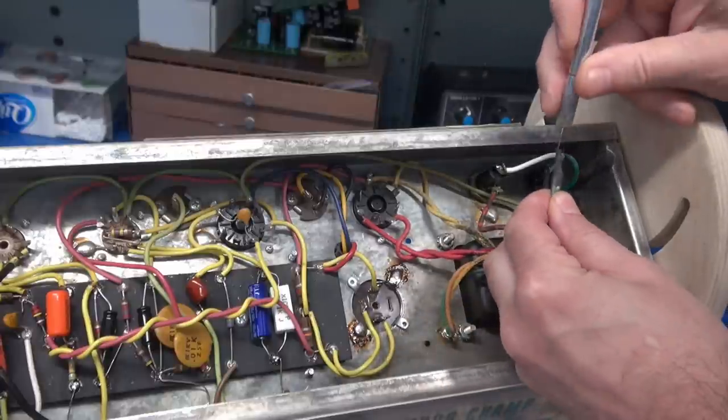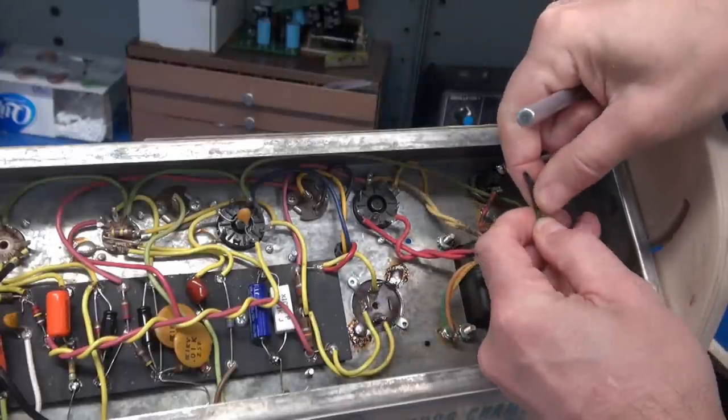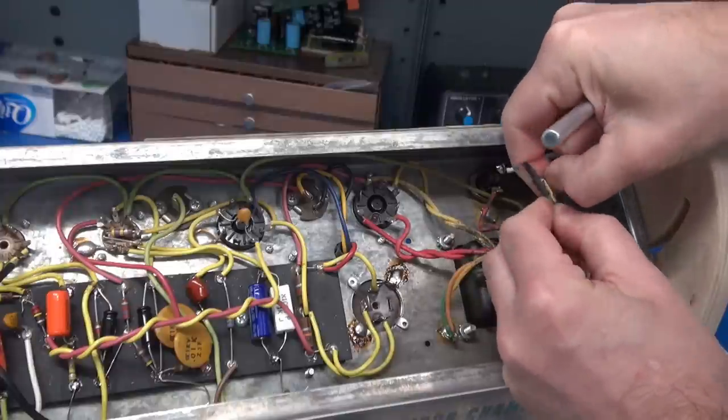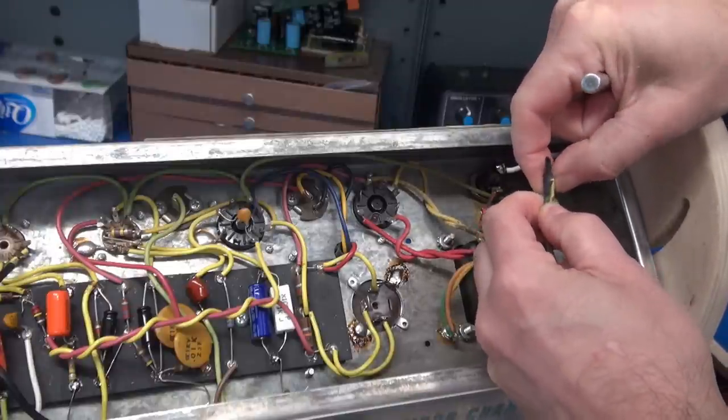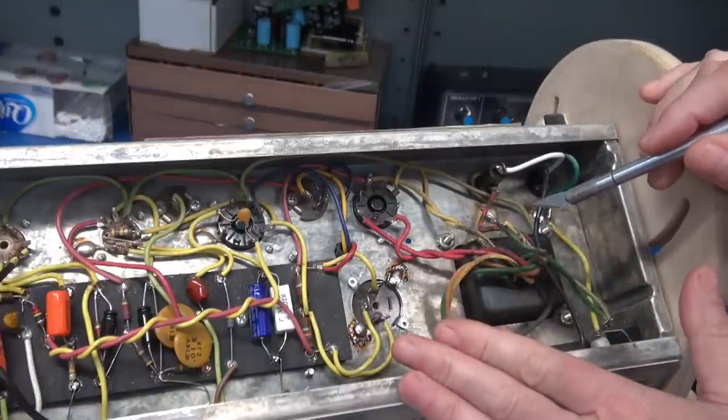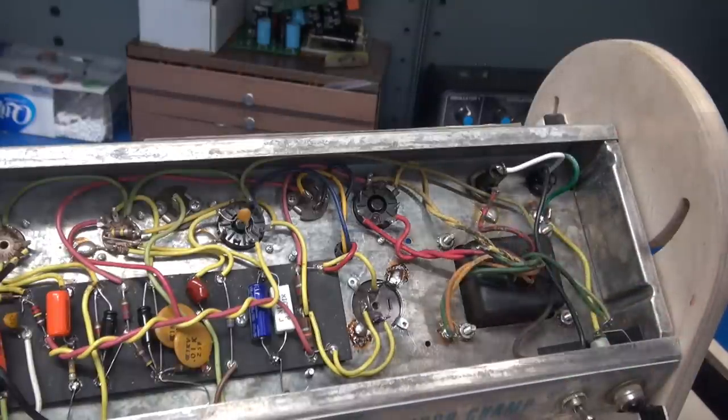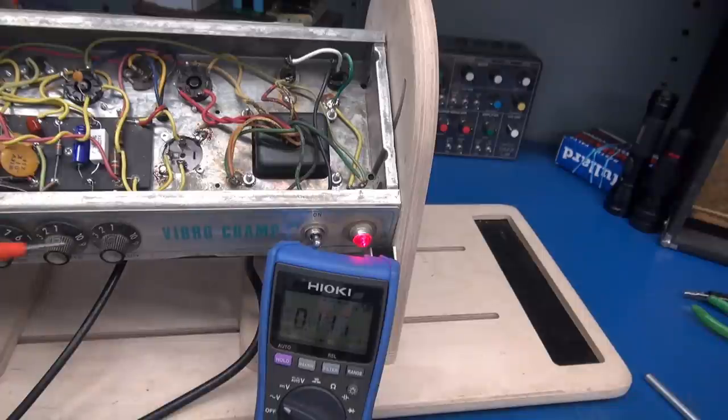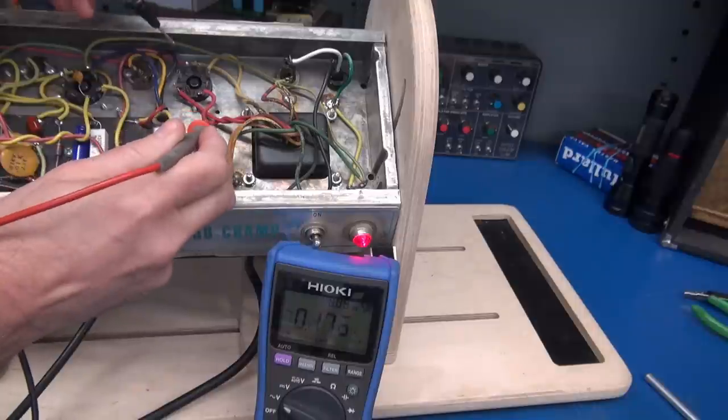What I need to do is take off this heat shrink tubing, separate these wires, and then connect them the way they should be for 120 volt operation. And we'll retest the amp.